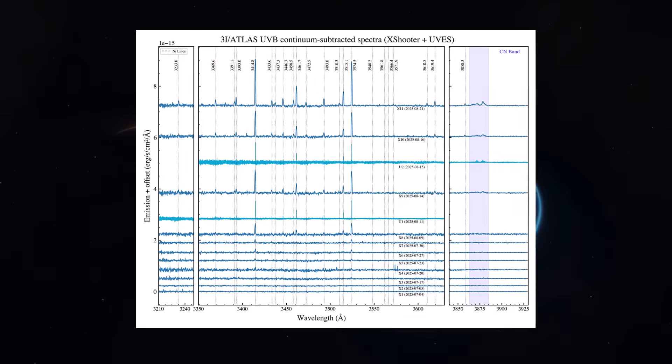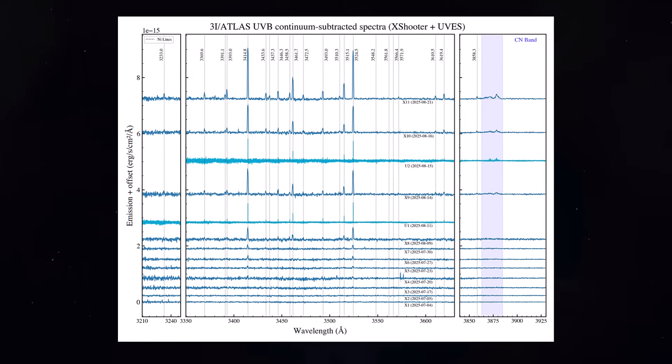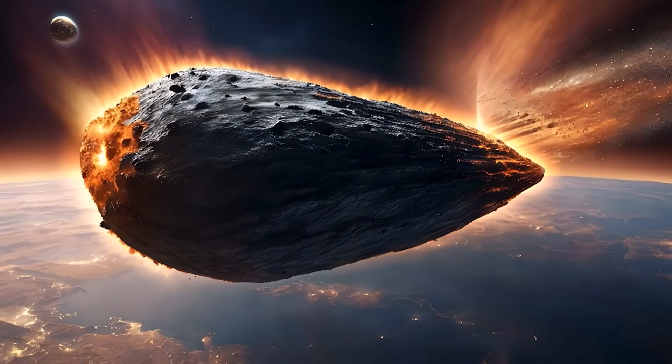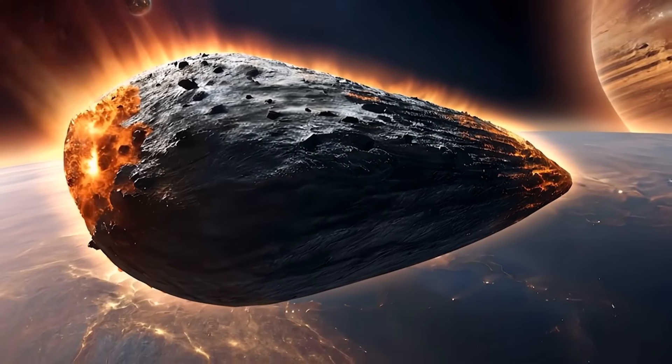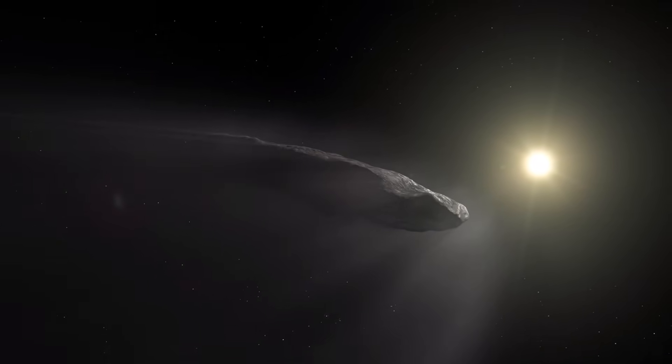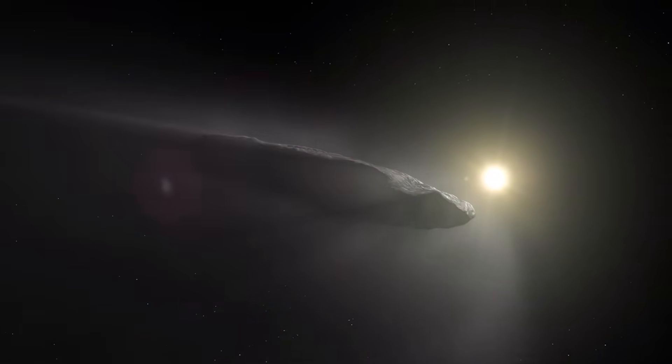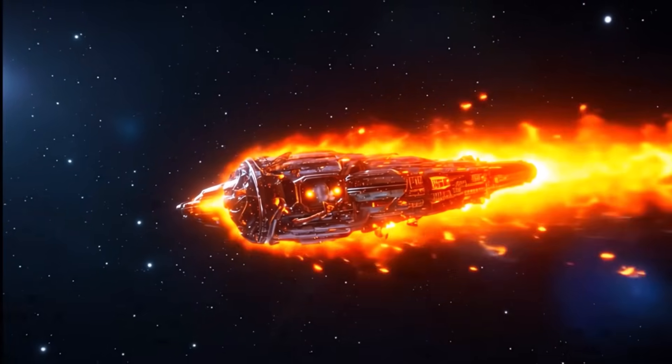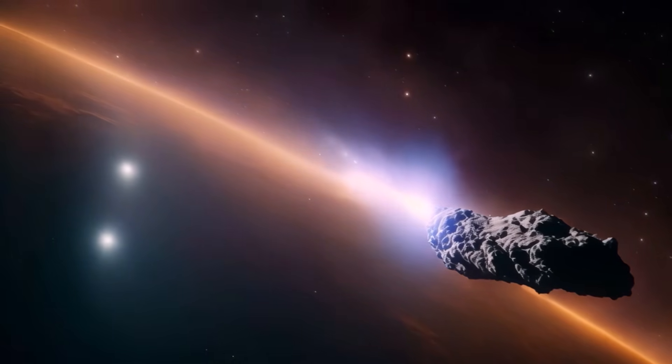Instead, using specific infrared wavelengths of 3.0, 4.26 and 4.7 micrometers, they found something else. Something massive. A colossal cloud of pure carbon dioxide gas surrounding the object. This cloud is 348,000 kilometers wide. That's nearly the distance from the Earth to the Moon, and is bleeding into space at an astonishing rate. 70 kilograms of CO2 every single second.